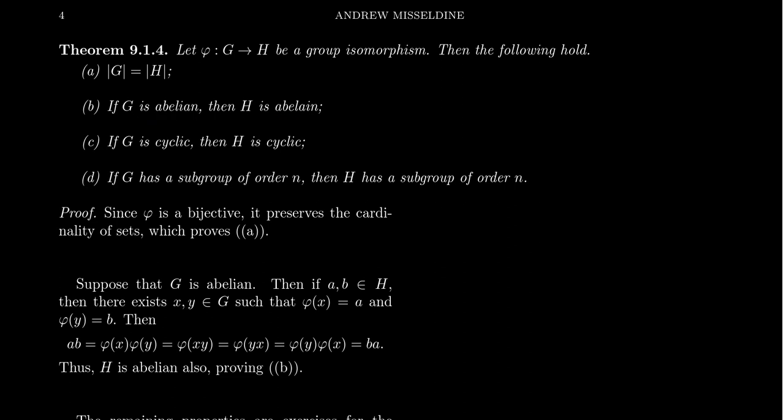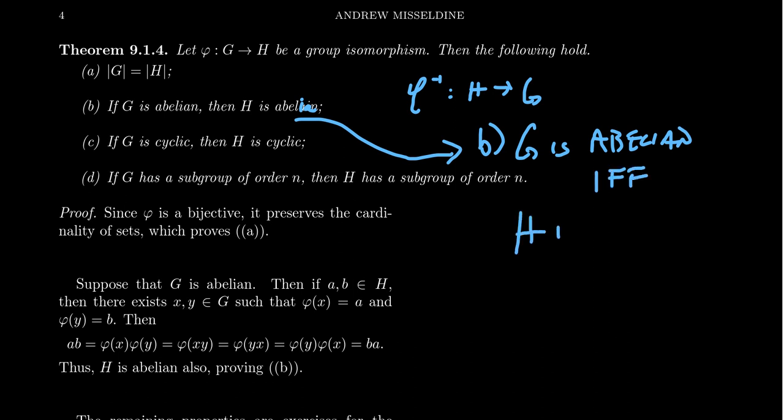Now I want you to remember that if two groups have an isomorphism between them, the inverse of the isomorphism itself is an isomorphism. So there exists some inverse map, phi inverse, that sends H to G, which would also be an isomorphism. So that means this statement is reversible. If G is abelian, then H is abelian, but if H is abelian, then G is abelian as well. So we can actually improve this statement and say that G is abelian if and only if H is abelian. Two groups, if they're isomorphic, are either both abelian or both non-abelian.